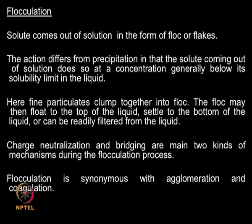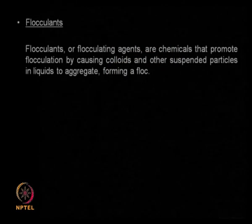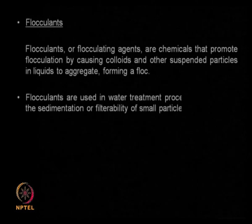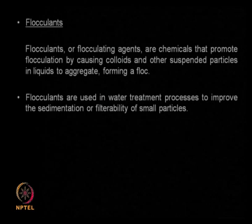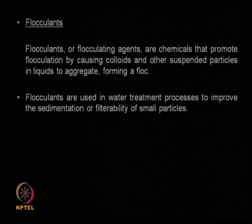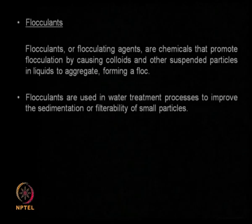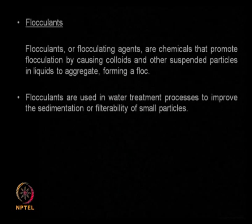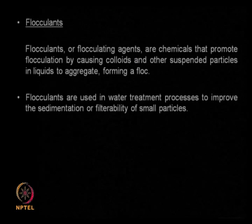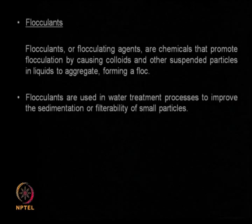Flocculants are chemicals added to neutralize surface charges. Two mechanisms operate: charge neutralization and bridging. This process is also called agglomeration or coagulation. Flocculants are widely used in water treatment to remove fine suspended solids before chlorination. Fine solids in water are too small to filter and will not settle on their own, so flocculation is adopted. Multivalent cations — aluminum, iron, calcium, magnesium — as well as simple electrolytes, acids, bases, and polyelectrolytes all promote coagulation and flocculation of fermentation broths.